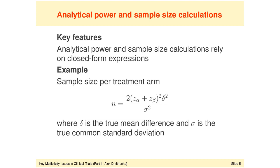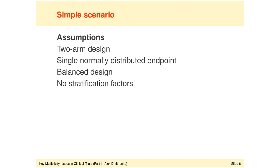This sample size per treatment arm is a simple function of the type 1 and type 2 error rates denoted by alpha and beta. It also depends on delta, the true mean treatment difference, and sigma, the true common standard deviation. It is a great formula. I only wish that we could use it more often in clinical trial settings when it comes to phase 3 clinical trials.